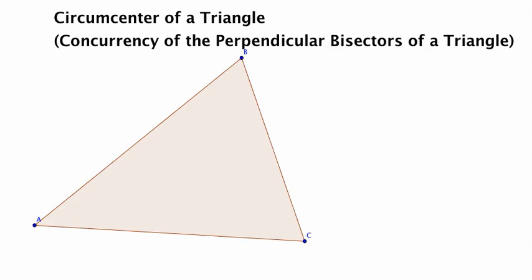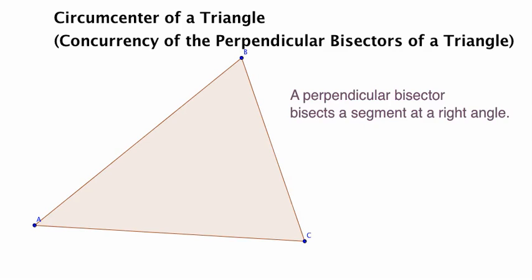So what does it mean to be a perpendicular bisector? Well, first of all, you need something to bisect, and that something is the side of the triangle.